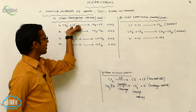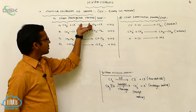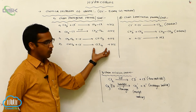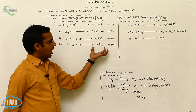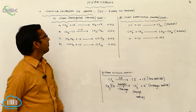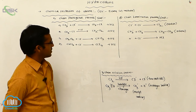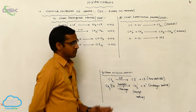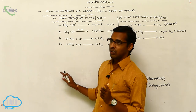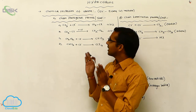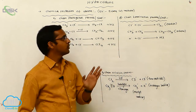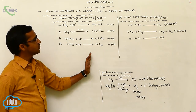Methyl radical is interacted with chlorine radical, and by addition of these reagents we are getting different types of products. After this, it undergoes termination. So this is your first property of alkane — substitution. The alkanes are organic compounds, and these organic compounds are participated in substitution reactions.